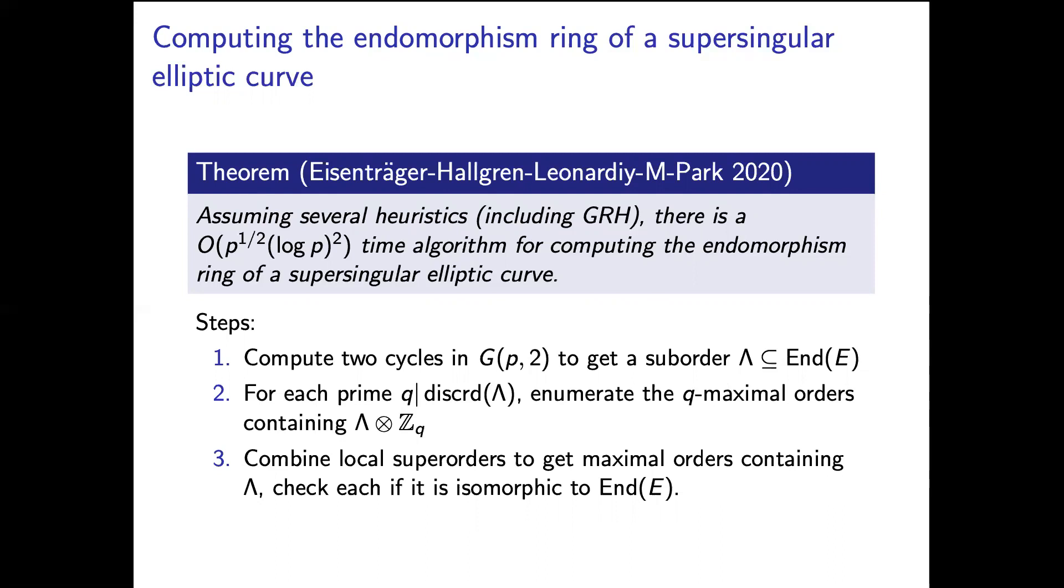And the primes dividing the reduced discriminant at least the primes different from p are the primes where our order is not maximal. And so in part of our work we give an algorithm for enumerating the maximal orders containing a Z-order. So we for example solve the enumeration problem locally in step two. And then in step three we're going to use our local information to solve the global enumeration problem. So by taking different choices of local q-maximal orders for the various primes q dividing our reduced discriminant of our order, we can put those together to get maximal Z-orders and then check if they're isomorphic to End(E).